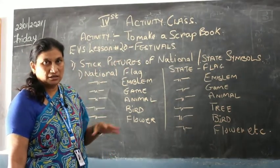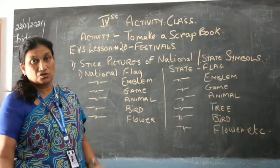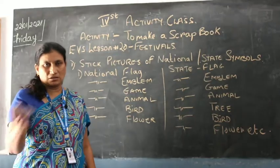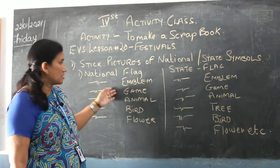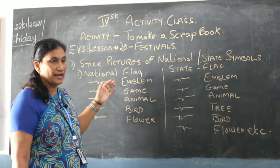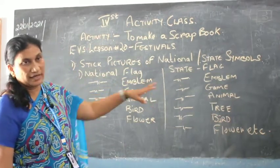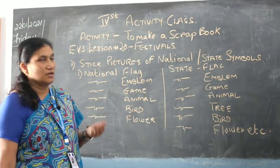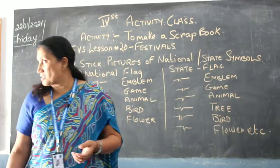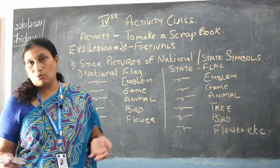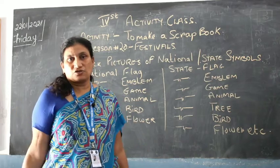Cover it neatly, write the theme on top, or stick a label on top since it's a used scrapbook. Then stick pictures of the national flag, emblem, game, animal, bird, and flower. On the other side, stick the state flag, emblem, game, animal, tree, bird, and flower.